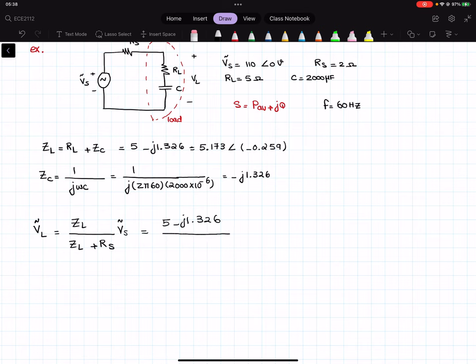So that will give us 5 minus j1.326, that is my ZL, over—now, Rs. What is Rs? Rs is 2 ohms. So that is Rs plus ZL. So it will be 7 minus j1.326, that multiplied by 110, which is the input voltage. And let me write it as 110 with the angle of 0. So that will give us, if we calculate that, we're going to get 79.66 with the angle of negative 0.072 volts. That would be my VL, the voltage across the load, but in the RMS format.